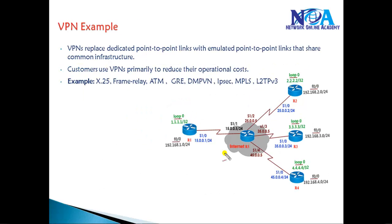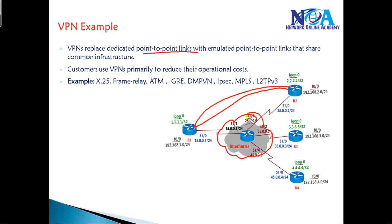Going back to the basics of VPNs as discussed in previous videos, a VPN is a virtually private network which is going to replace most point-to-point connections. We can have a virtual point-to-point connection over an existing service provider network or the internet. We have different implementations like GRE, DMVPN, MPLS, L2DPv3 protocols, and Frame Relay.